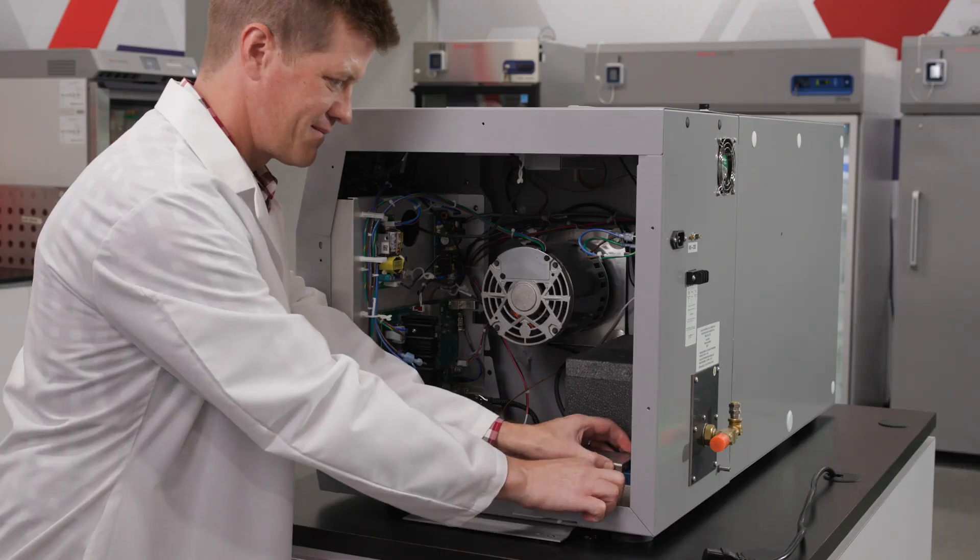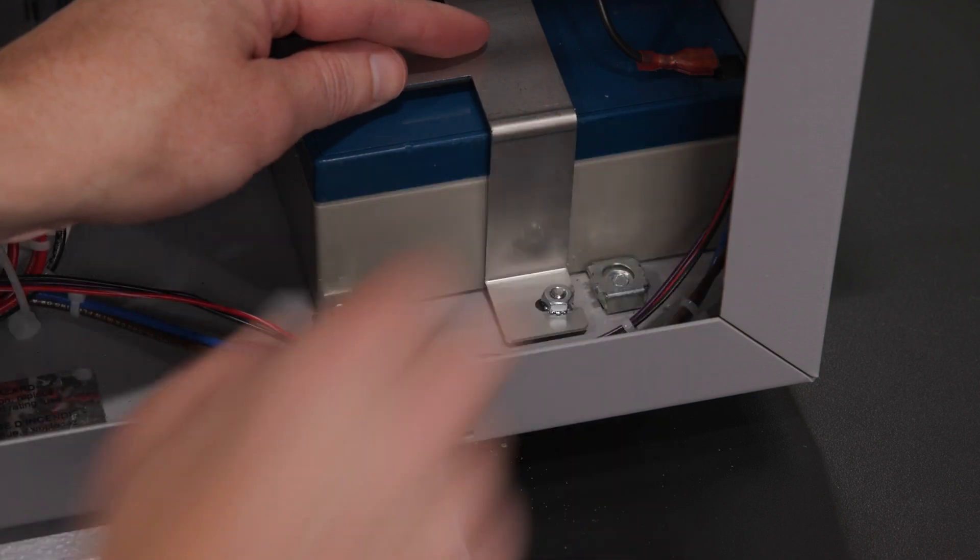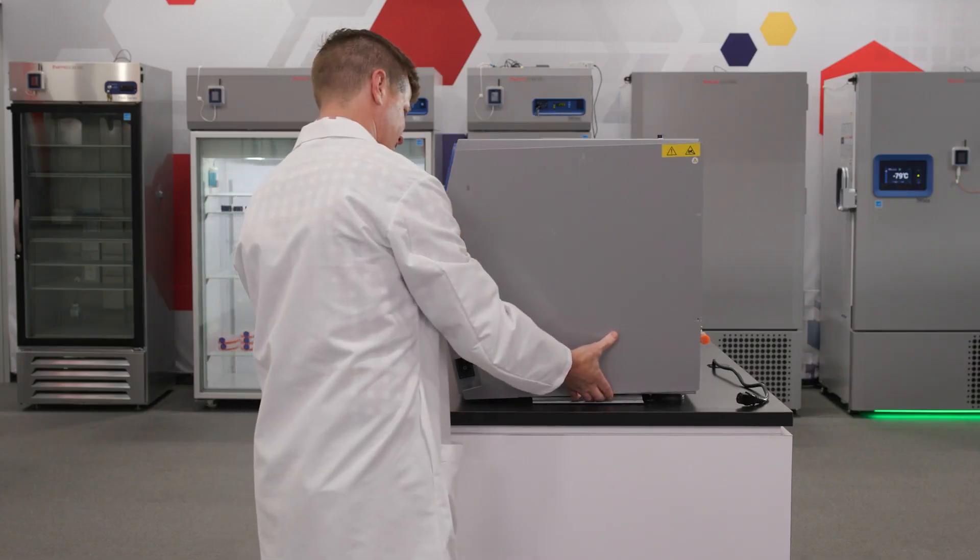After attaching the battery, replace the restraint cage by tightening back on the bolts around the cage. Once the battery is secure,